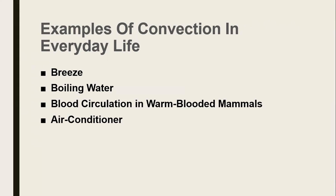In warm-blooded mammals, the blood circulation system depends on the movement of particles in the blood from one organ to another, carrying heat and nutrients throughout the body.